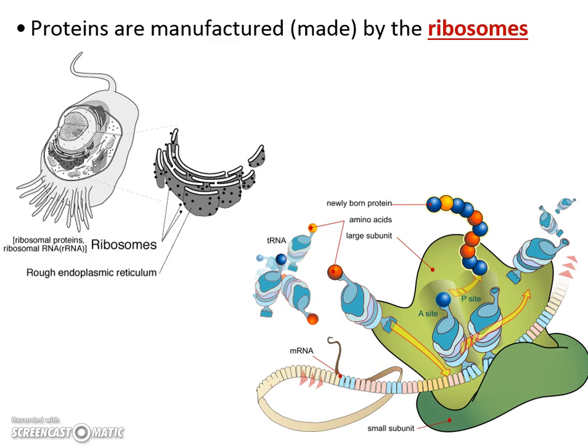Where are proteins made? Proteins are made in the ribosome. The ribosome is a protein factory made of two pieces — a large subunit and a small subunit. Think of them as opening and closing like a conveyor belt or machine. The mRNA strand runs through it, and it tells the ribosome how to assemble your proteins.